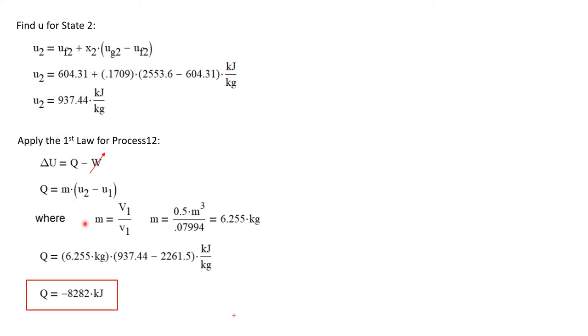We don't know what the mass is, but we know that mass is volume divided by specific volume. I've noted here that I'm going to use state 1 properties, but really I could use state 2 properties because they're all identical. The volume at state 1 is equal to the volume at state 2, and the specific volume at state 1 is equal to the specific volume at state 2. So the mass is the volume, which was 0.5 cubic meters, divided by the specific volume, which is 0.07994 cubic meters per kilogram. That provides a mass of water in the tank at 6.255 kilograms.